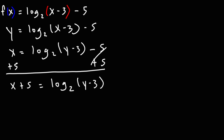Using the properties of logs, I need to convert it from its logarithmic form to its exponential form. Here's how you can do that. If you have log base a of b is equal to c, to convert it to exponential form you can use this formula: a raised to the c is going to equal b.